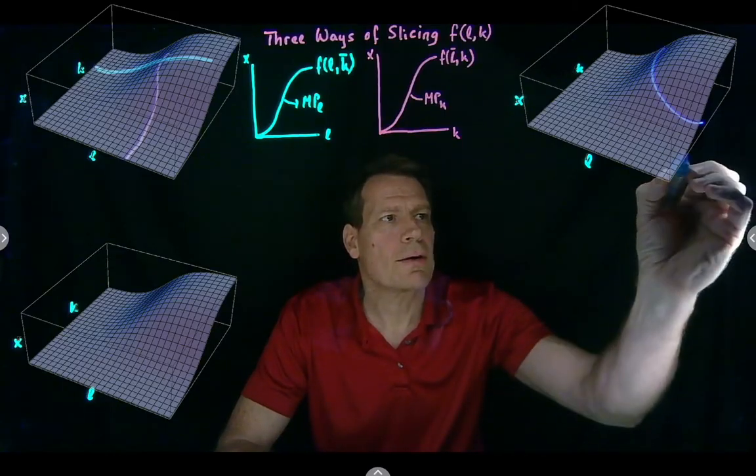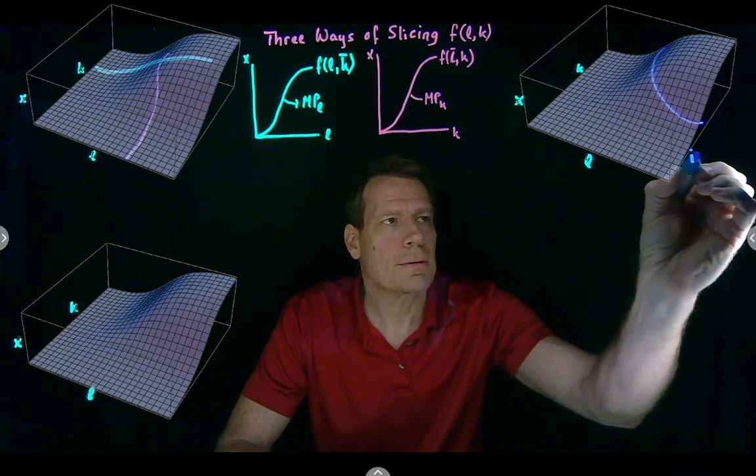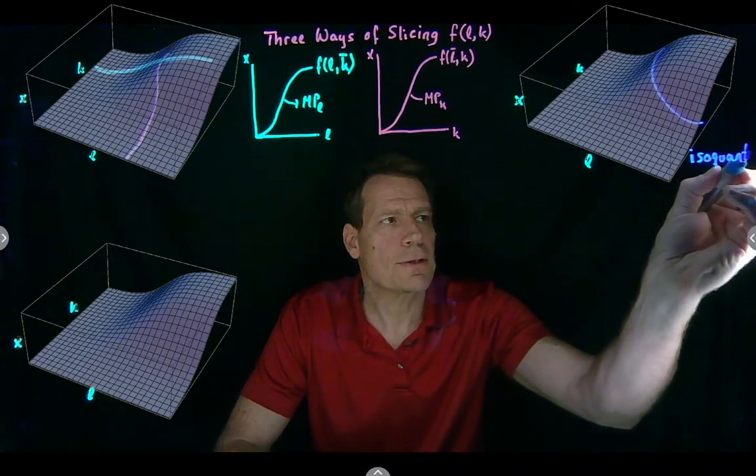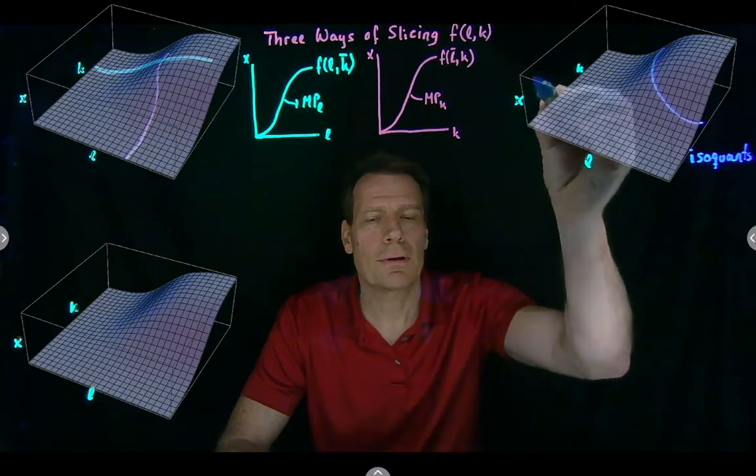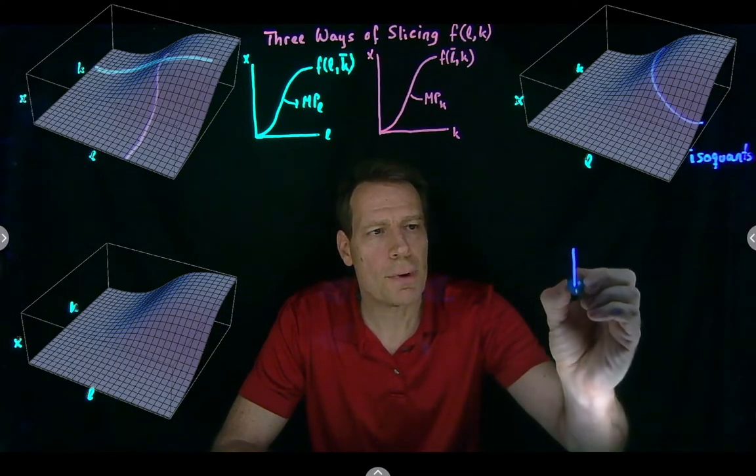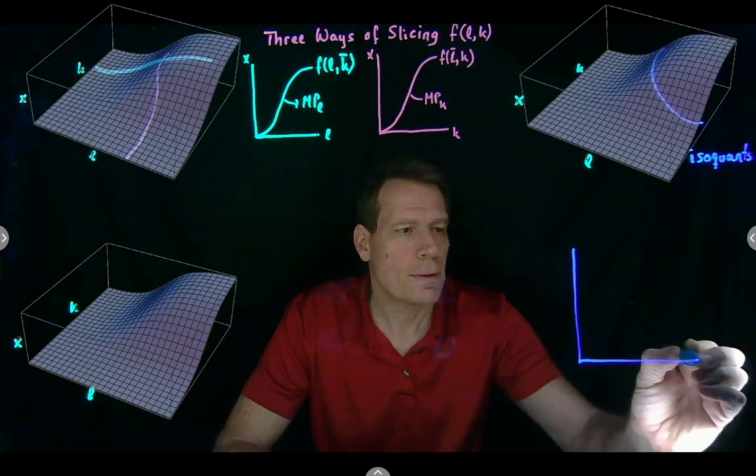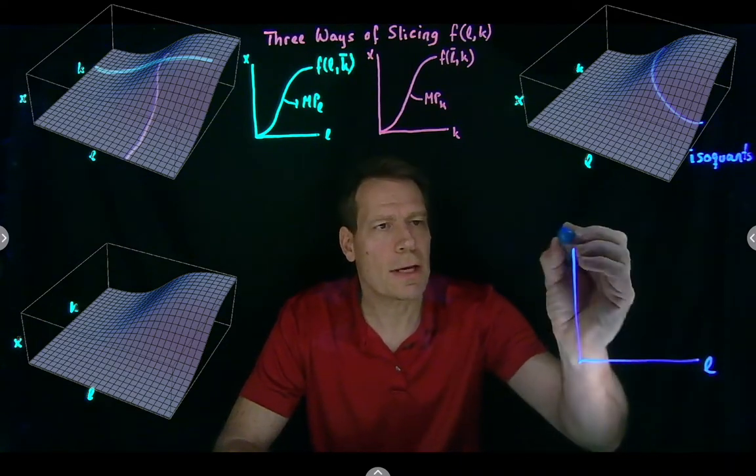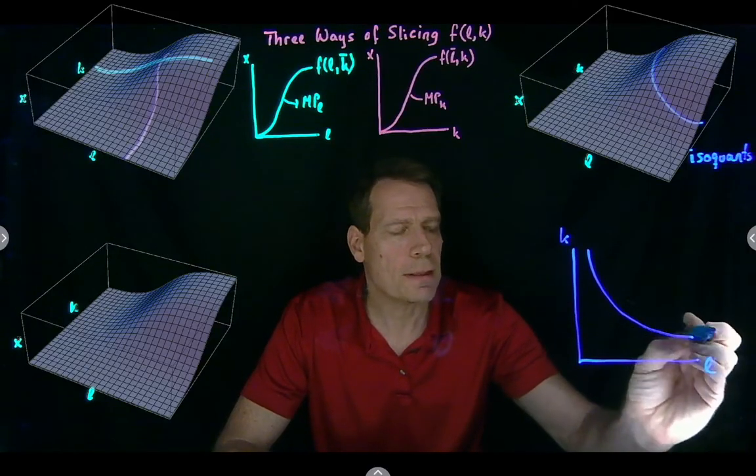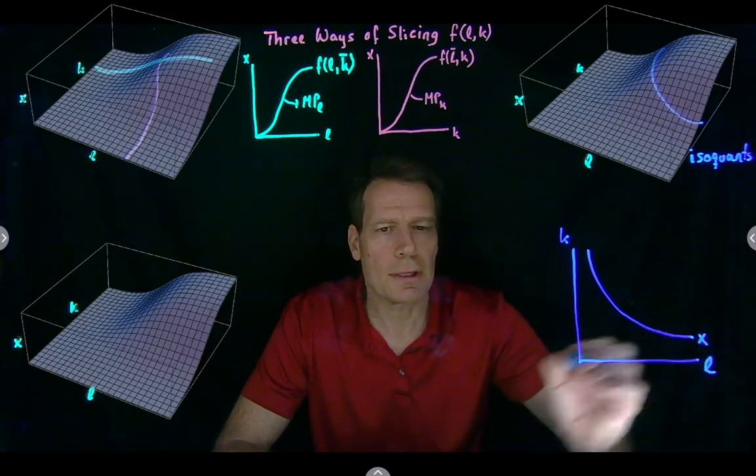So we derived an isoquant. And of course, there are lots of isoquants. There's one for each level of output. We can then graph those isoquants in the picture, where we put labor on the horizontal, capital on the vertical, and we get all the input bundles that can produce a certain level of output.